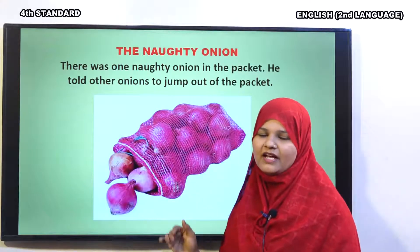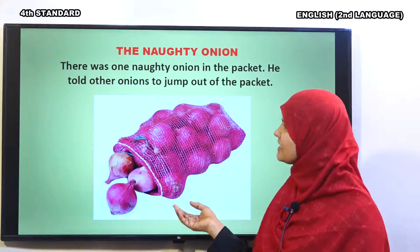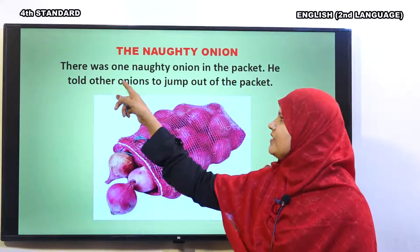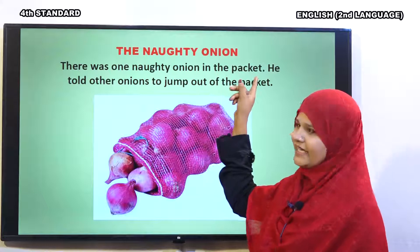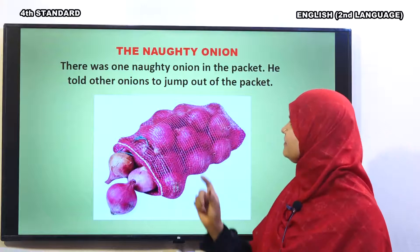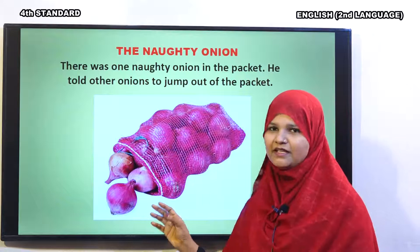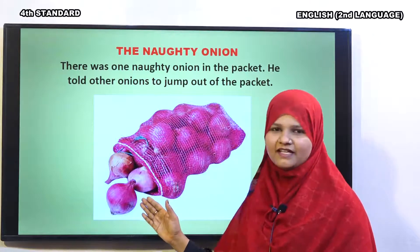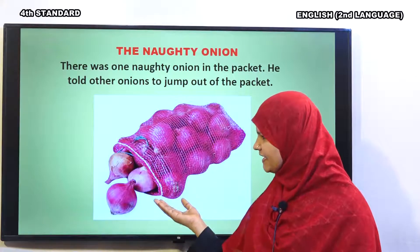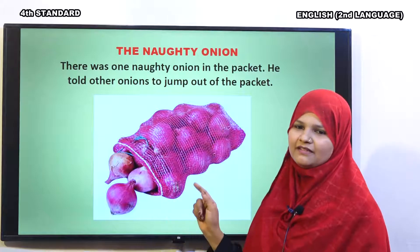So, let us move to the lesson. Now, you have come to know about all the new words. Let us read the lesson. The Naughty Onion. There was one naughty onion in the packet. Yeh jo packet hai, ismein ek onion jo hai, bahut shariir thi. He told other onions to jump out of the packet. Shariir onion ne tamaam onions se kaha ke chalo hum bhaag jaate hain, isse thaili se nikal jaate hain. Others are also coming out of the packet.